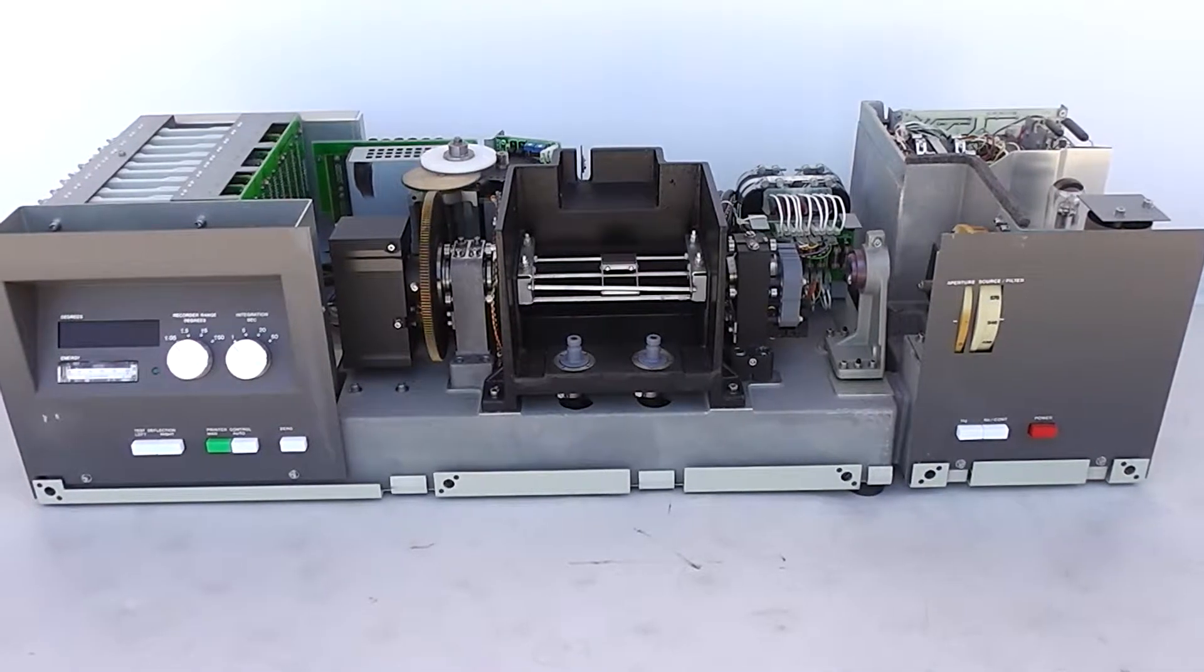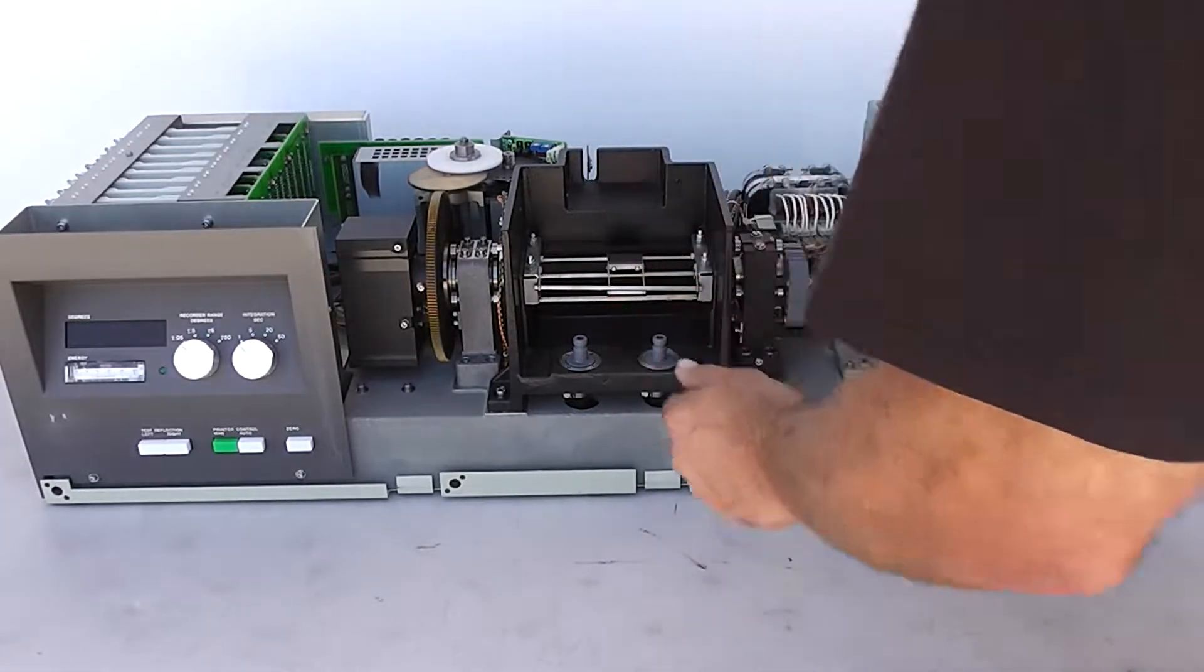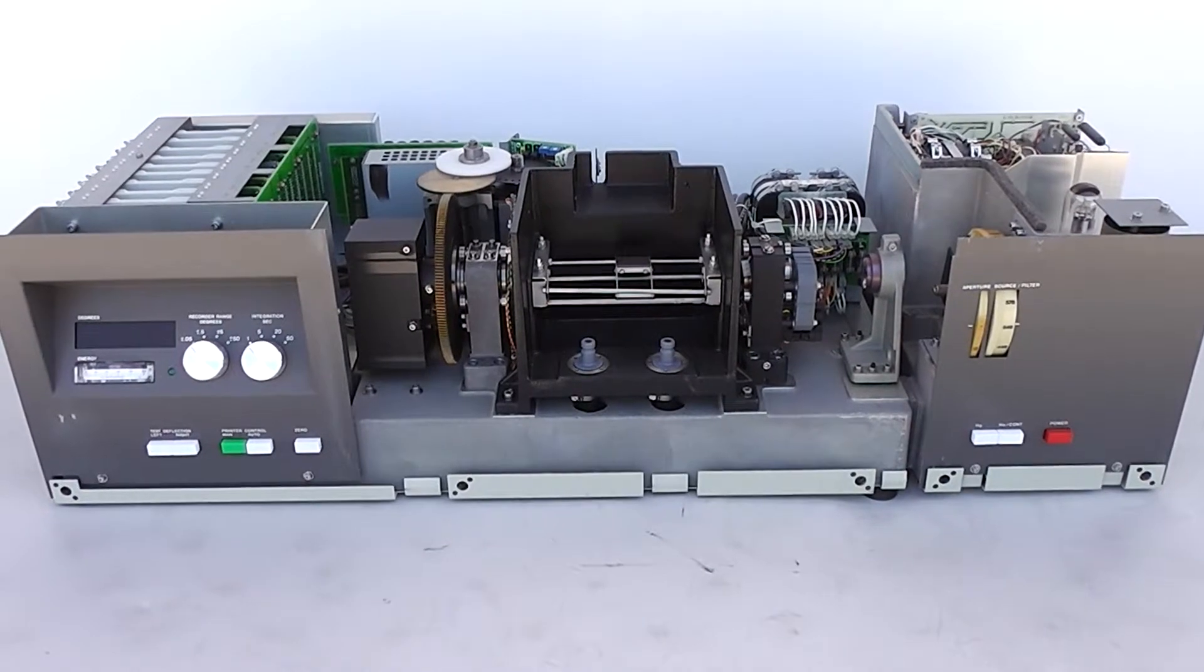This is a Perkin Elmer 241 Polarometer. I took off the case so you can see it naked and turn it on to check out the innards.